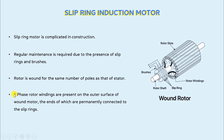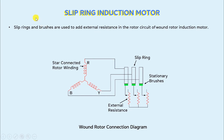Moving on to the next point: the three-phase rotor windings are present on the outer surface. These are the rotor windings, and the ends of these rotor windings are permanently connected to the slip rings. The main purpose of slip rings and brushes in a slip ring induction motor is to add external resistance in the rotor circuit of a wound rotor induction motor. In the diagram, this is the external resistance in the rotor circuit, connected with the slip rings and stationary brushes.